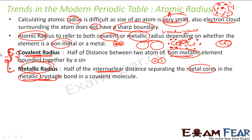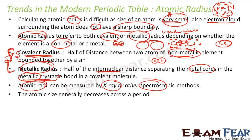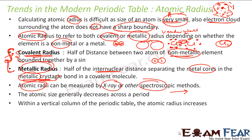They also use van der Waals radius. We will discuss all this later, but let us understand that there is something called atomic radius, and these atomic radii can be measured using X-ray or other methods. The atomic size generally decreases across a period, and within the vertical column the atomic radius increases.